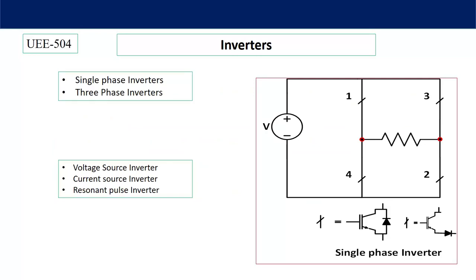Based on the output voltage, two types of inverters are popular: single-phase and three-phase inverters. Based on output voltage and current quality, three types exist: voltage source inverters, current source inverters, and resonant pulse inverters. Voltage source inverters are more popular in domestic applications; current source inverters are used for drive applications; and resonant pulse inverters are very efficient. In the circuit diagram you can see there are four switches and a DC voltage connected.